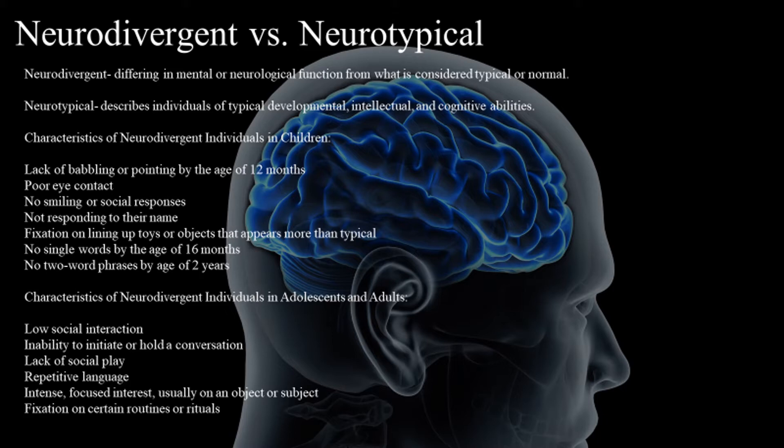Characteristics of neurodivergent individuals in children include lack of babbling or pointing by the age of 12 months, poor eye contact, no smiling or social responses, not responding to their name, fixation on lining up toys or objects more than typical, no single words by age 16 months, and no two-word phrases by age two years.